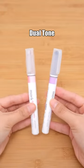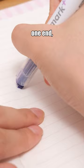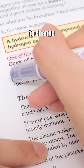Kokuyo Mark Plus Dual Tone Highlighter. It has two tips on one end, offering three different usages. Simply rotate to change the color.